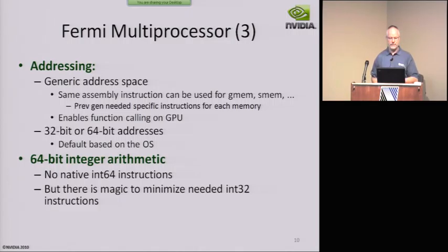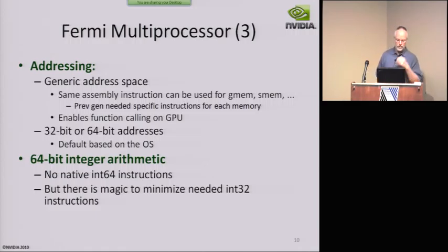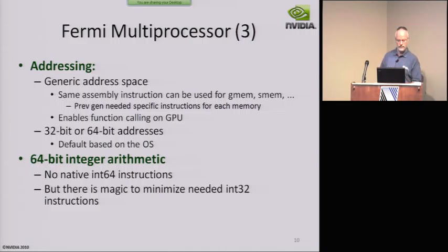The addressing for Fermi has been improved from the previous generation. We've homogenized the address space so that the same instructions can be used for global memory, shared memory — everything is part of the same flat address space. That enables simpler object code, and we can do things like function calling and passing function pointers. We now support full 64-bit addressing, but also support a 32-bit mode defaulted based on your OS, which you can override. We support 64-bit integers with a little magic to make it reasonably efficient, and we haven't seen it as a bottleneck in any applications yet.